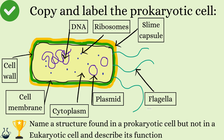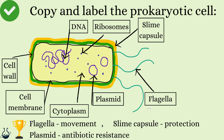The challenge was to name a structure found in a prokaryotic cell but not in a eukaryotic cell and describe its function — in other words, what structure do we find in bacterial cells that we do not find in animal or plant cells, and what does that structure do? There are three correct answers: flagella for movement, plasmids for antibiotic resistance, and the slime capsule for protection. Well done if you got any one of these correct.